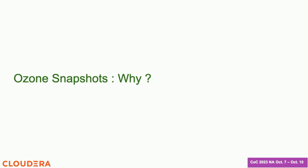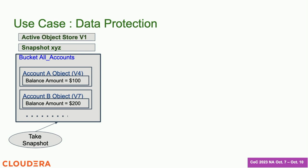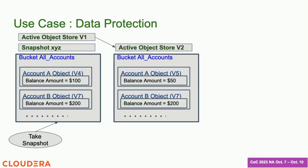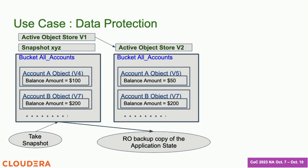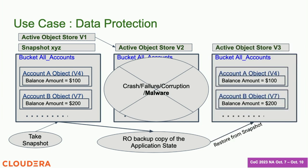Now let's look at the different use cases. One of the primary use cases is data protection. I have the active object store, and in a consistent state I take a snapshot. I can let modifications continue on the active object store. I preserve this snapshot somewhere in my backup storage. If there is any problem — the application crashes, there's malware or ransomware infection and corruption — I can always go back to my snapshot and restore the application state. If I restart the application, I won't get into any weird state because I have a consistent image.